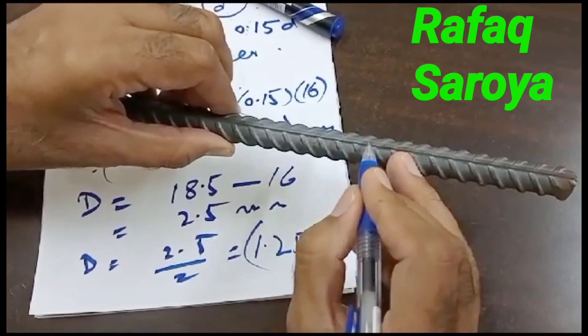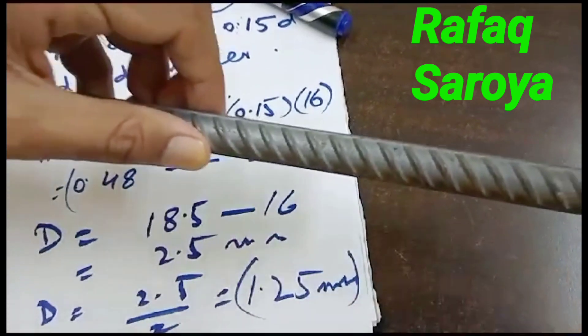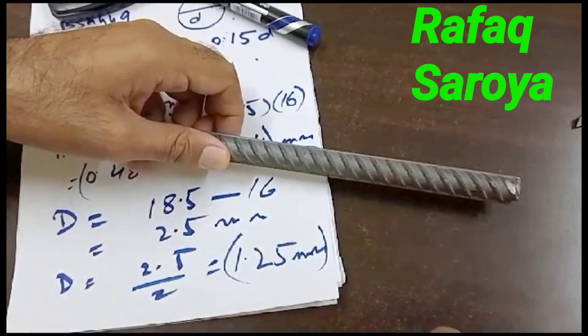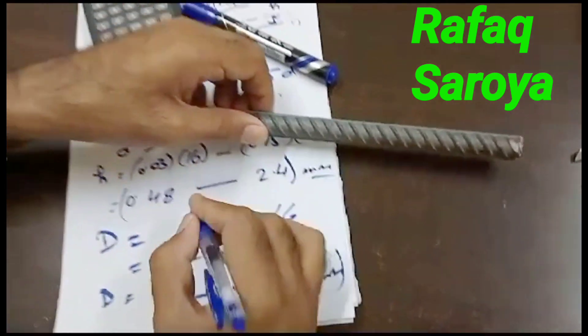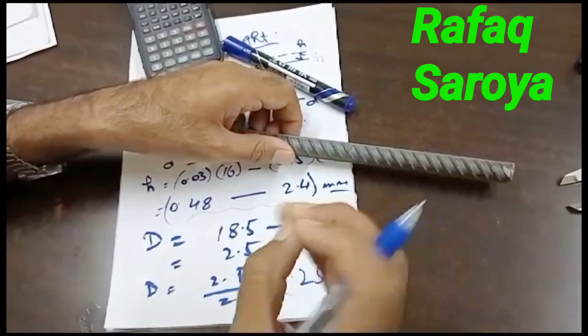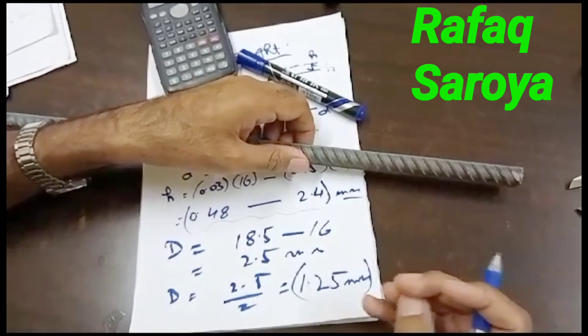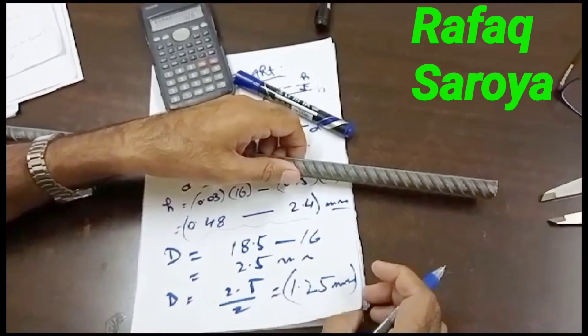Similarly, if I will measure it from this position, maybe its value will come more or its value will come less. But the range is defined over here by the standard.